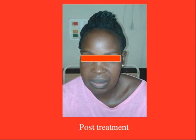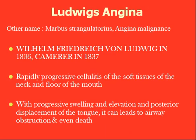Ludwig Angina is also known as Morbus Strangulatorius and Angina Maligna. It was described by William Frederick von Ludwig in 1836 and Kramer in 1837. Ludwig Angina is a rapidly progressive cellulitis of the soft tissue of the neck and floor of the mouth. With progressive swelling and elevation and posterior displacement of the tongue, it can lead to airway obstruction and even patient death.